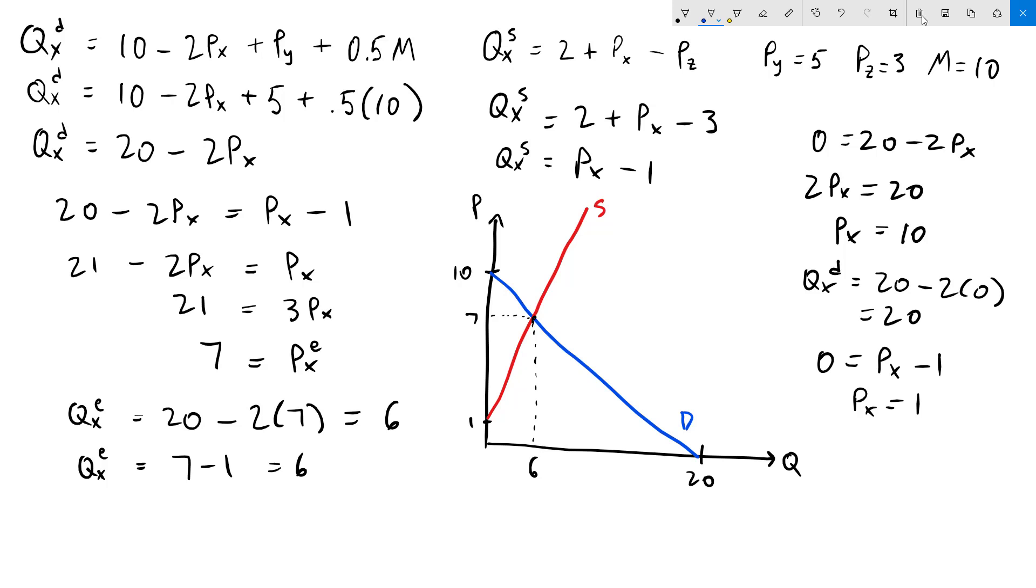The consumer surplus is the area below the demand curve and above the price. So that's going to be this triangle right here. The producer surplus is the area under the price but above the supply curve. So the producer surplus is going to be this area right here.